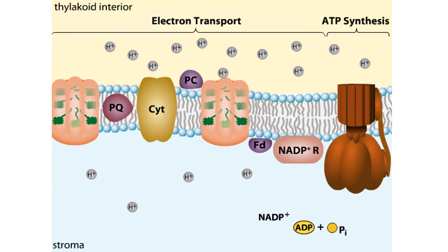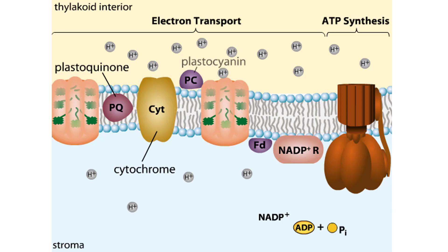In an electron transport chain, electrons are passed from one electron carrier to another in a series of redox reactions. In the thylakoid membrane, the chain consists of carriers called plastoquinone, cytochrome, plastocyanin, ferredoxin, and NADP reductase.